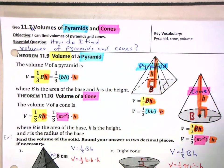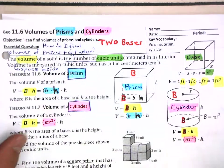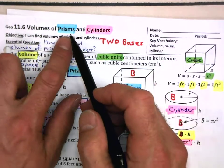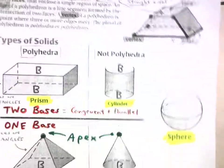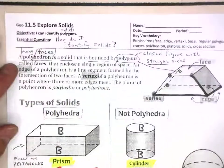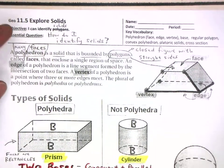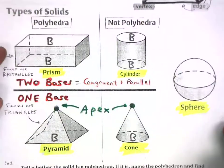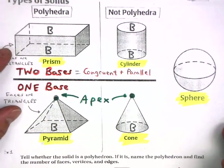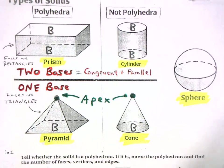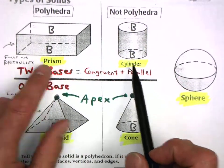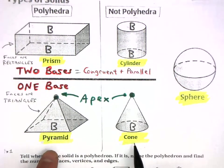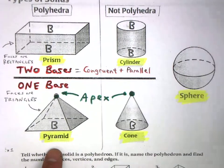Last section we looked at volumes of prisms and cylinders. So let's back up a little bit and look at your 11.5 notes to remind ourselves of the differences between prisms and cylinders versus pyramids and cones.